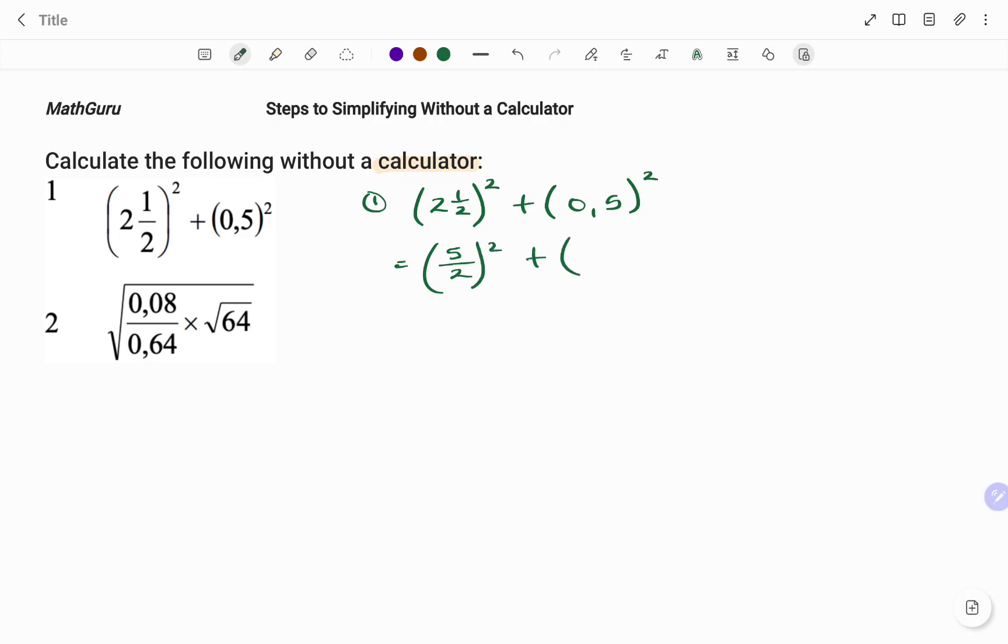Plus, likewise, I'm going to change my decimal into a fraction. And because I'm moving just one decimal place to the right, that will be 5 over 10 raised to the power of 2.